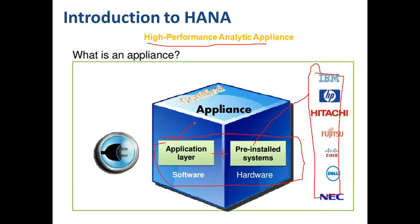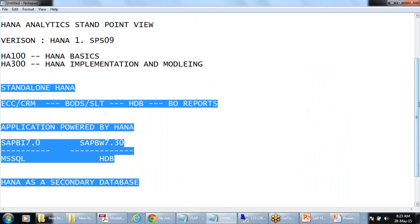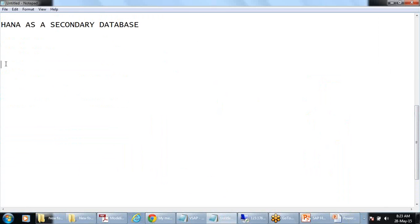HANA is a database, but what type? Any regular RDBMS concepts apply — it is relational database management — but the way of storage is in-memory, not like a traditional database. It is also a hybrid database. First let me discuss what a hybrid database is, then move to in-memory. Some databases like MSSQL, MySQL, MaxDB are suitable for OLTP applications — they read row by row, which is called row store.